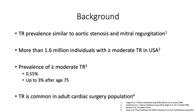Tricuspid regurgitation is a common presentation in adult cardiac surgery. The TR prevalence has been shown to be similar to aortic stenosis and mitral regurgitation. In the US, more than 1.6 million individuals are estimated to have moderate or greater TR, and the prevalence of moderate or greater TR has been proposed to be around 0.55%, which may be as high as 3% after age 75.